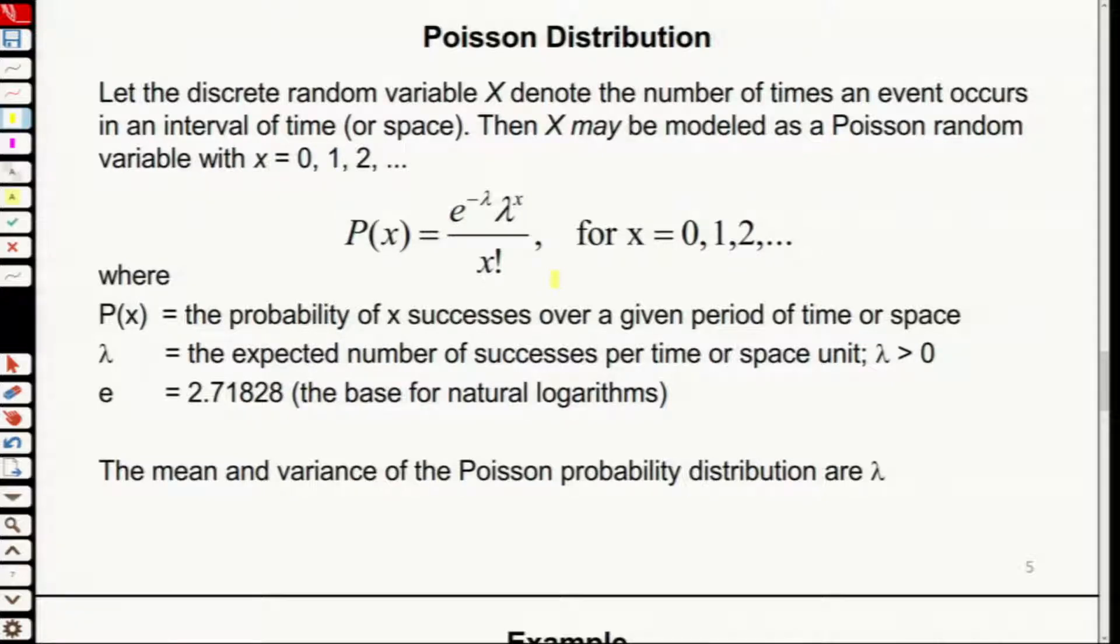The discrete random variable X denotes the number of times an event occurs in an interval of time or space. X may be modeled as a Poisson random variable, with X equals 0, 1, 2. So they are all integers.